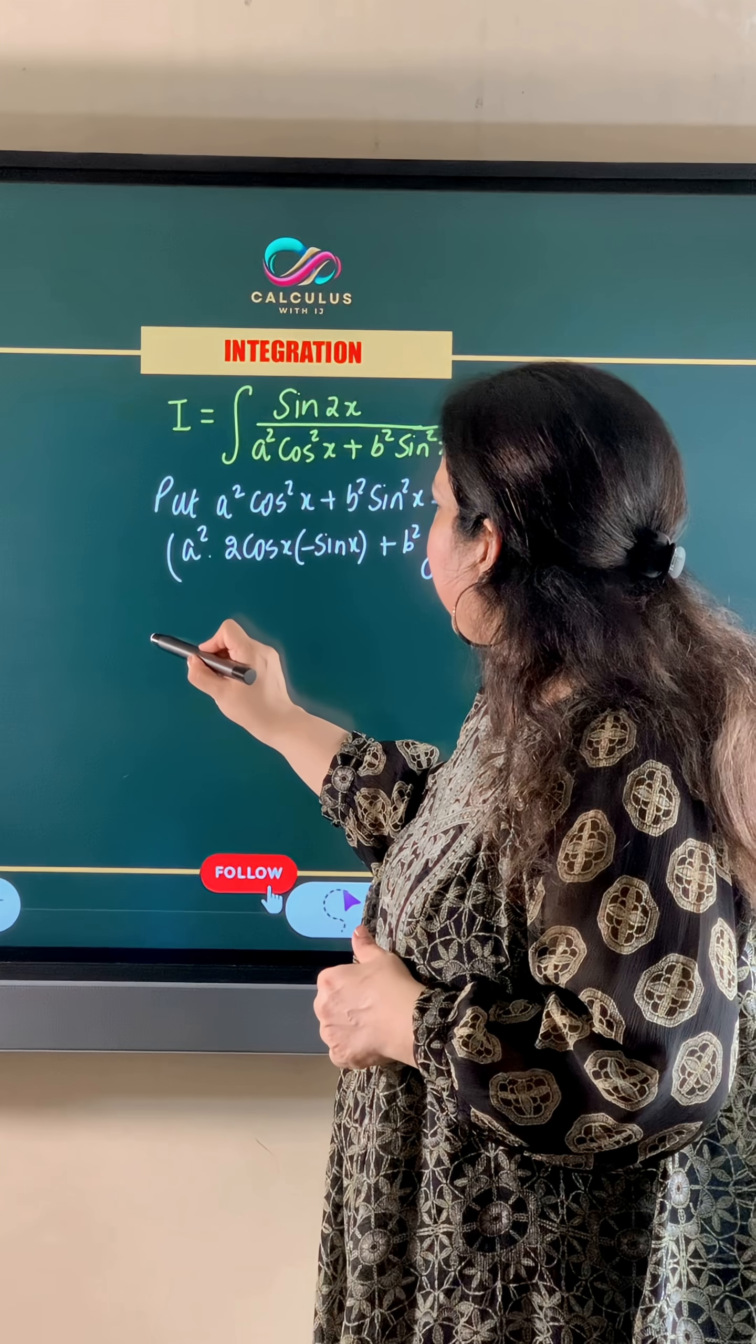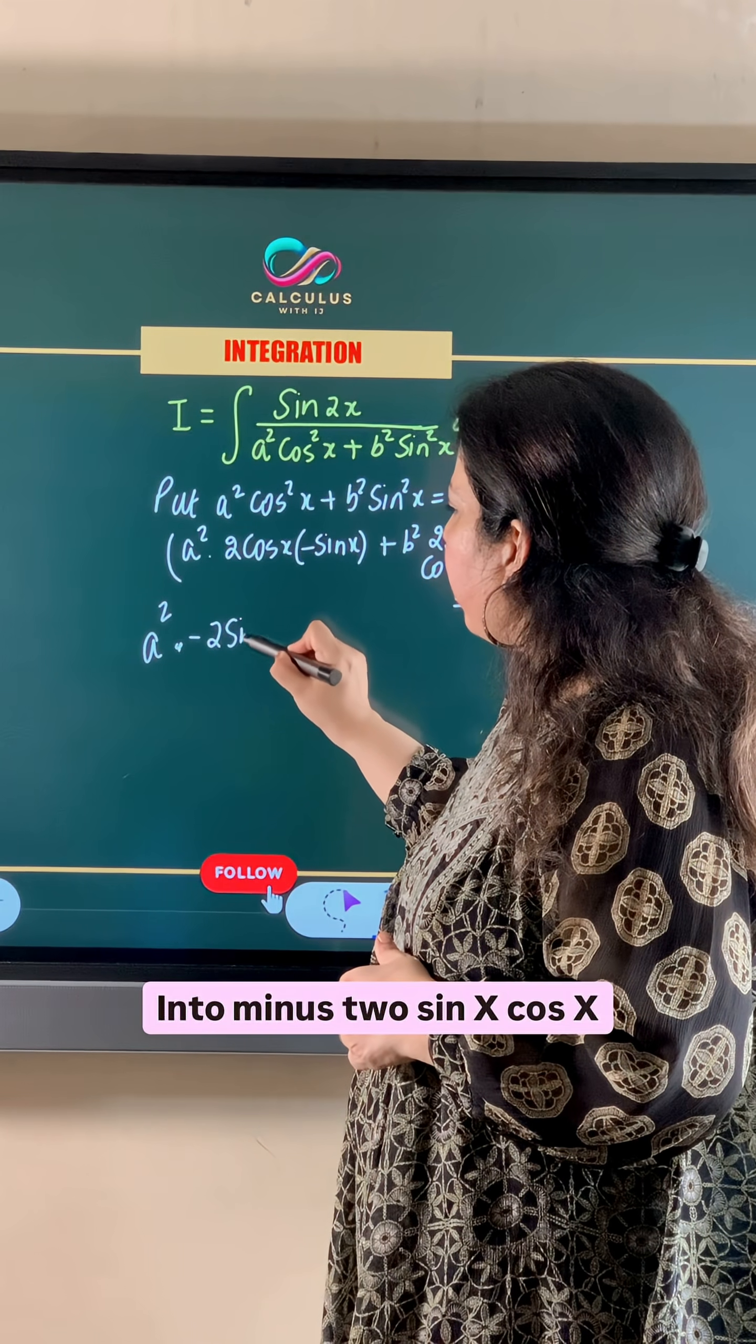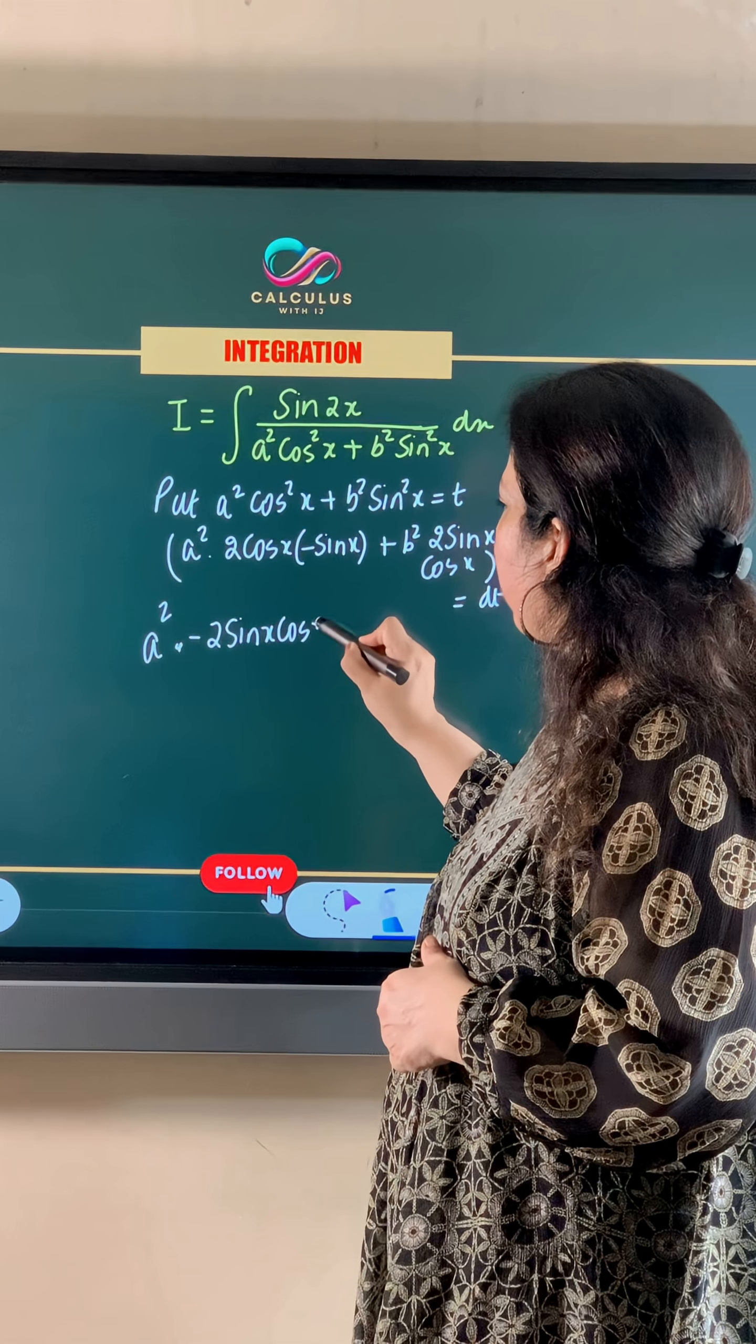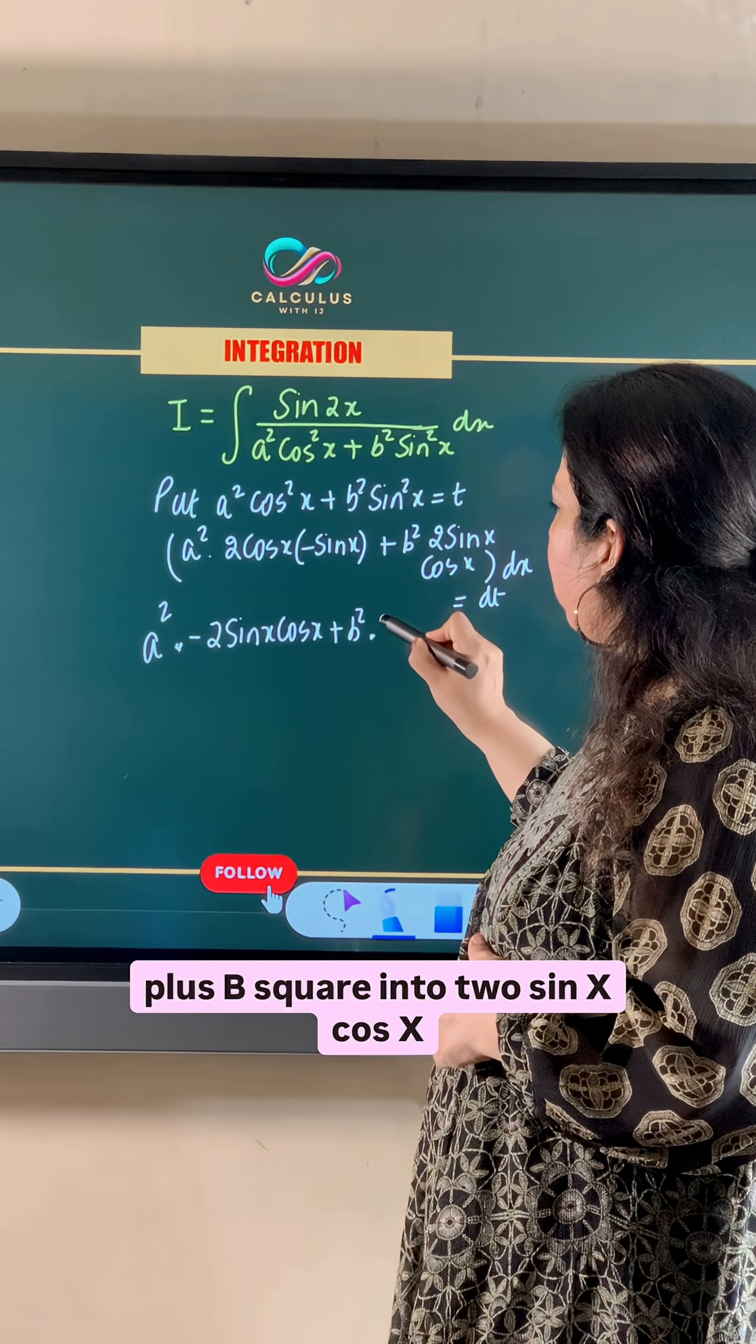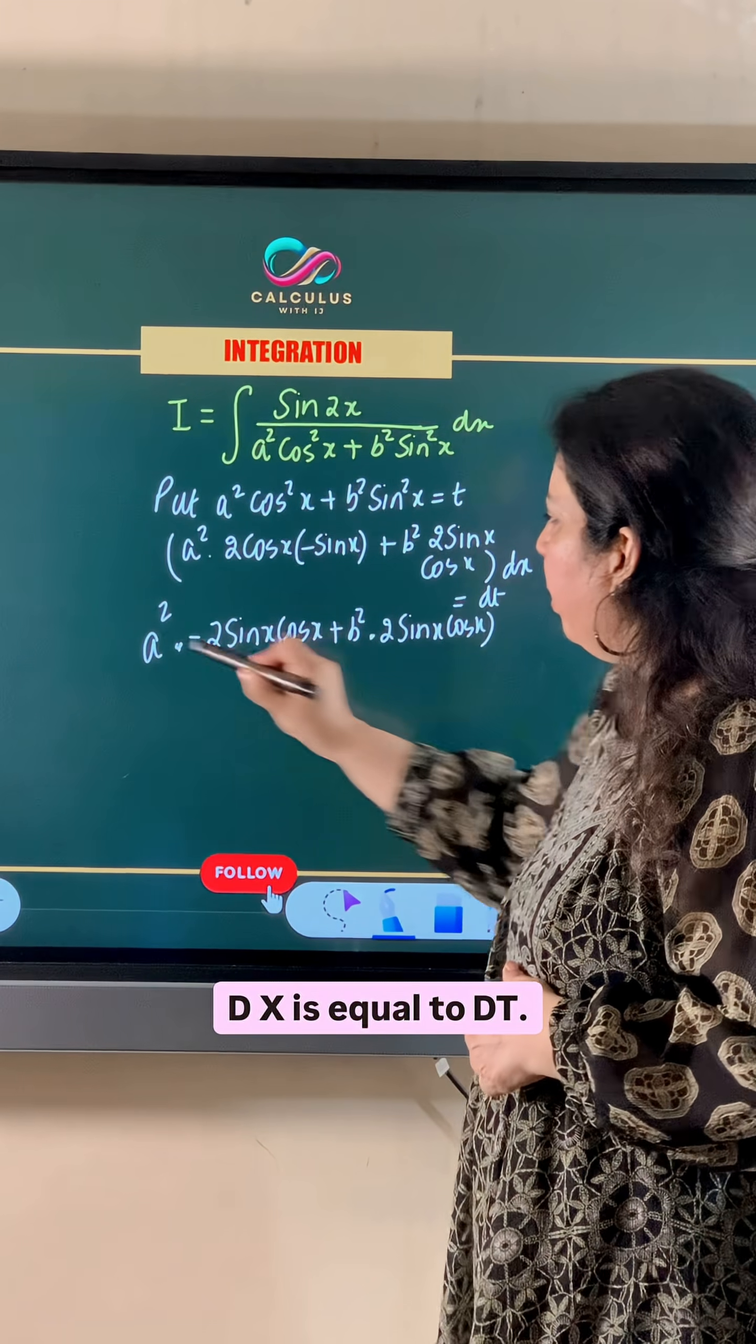So we get a square into minus 2 sin x cos x plus b square into 2 sin x cos x dx is equal to dt.